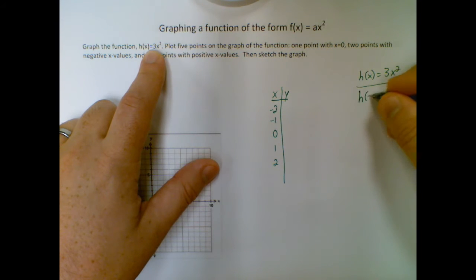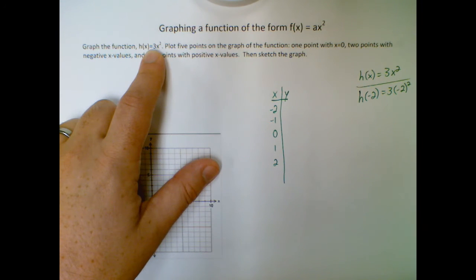So h of negative two equals three times, and remember you're plugging this in, definitely recommend putting those in parentheses so you don't make mistakes, especially if you're going to be double checking with a calculator, because if you don't have parentheses when you do three times negative two squared it will give you something different than if that's in parentheses.